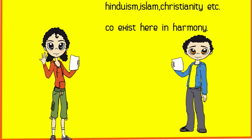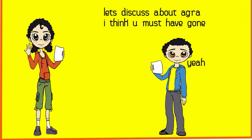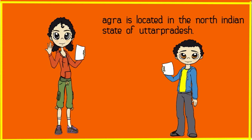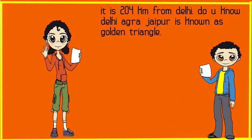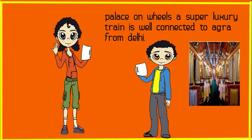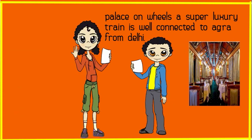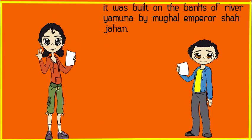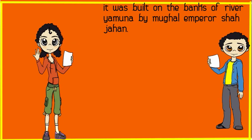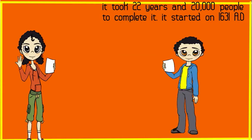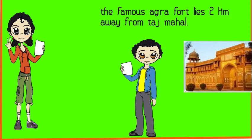Religions include Hinduism, Islam, Christianity, etc. Visit to Agra: Agra is located in the North Indian state of Uttar Pradesh. It is 204 km from Delhi. Delhi, Agra, and Jaipur are known as the Golden Triangle. The Palace on Wheels, a super luxury train, is well connected to Agra from Delhi. The Taj Mahal has made Agra world famous as home to this enchanting monument. It was built on the banks of River Yamuna by Mughal Emperor Shah Jahan. It took 22 years and 20,000 people to complete it, starting in 1631 AD.